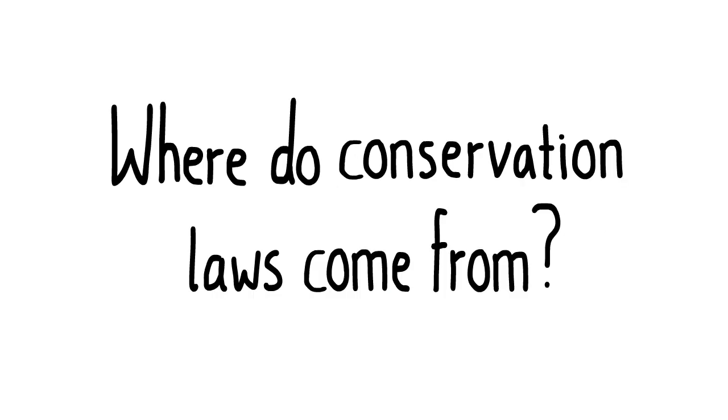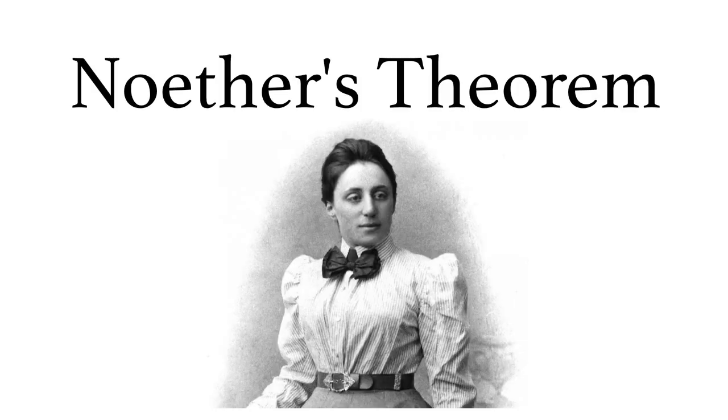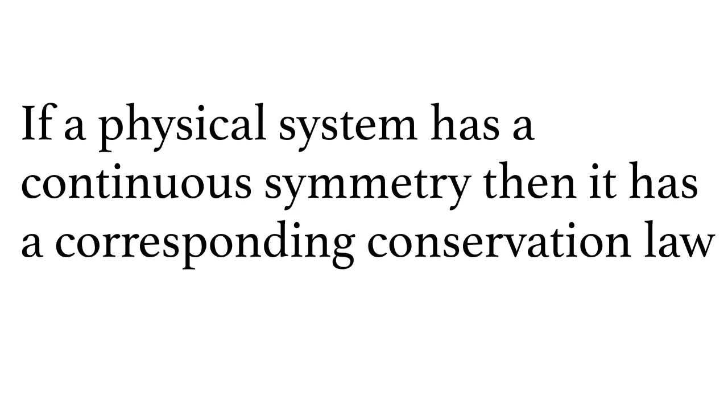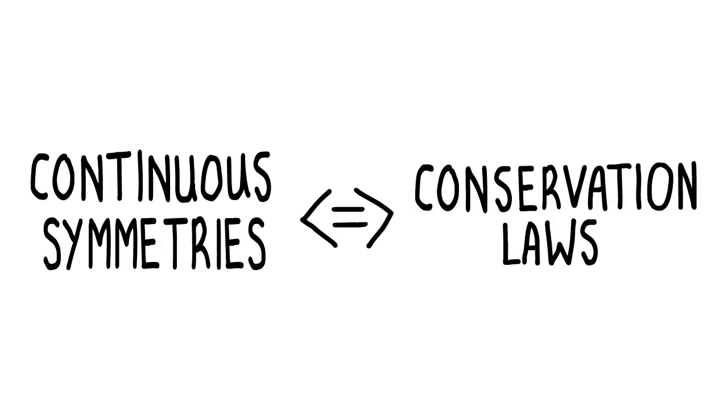But where do these conservation laws come from? Why is it that the total energy and momentum of a closed system must always stay the same? An insight into these laws comes from German mathematician Emmy Noether, who deduced that if a physical system has a continuous symmetry, then it must have a corresponding conservation law. Or in other words, continuous symmetries imply conservation laws.